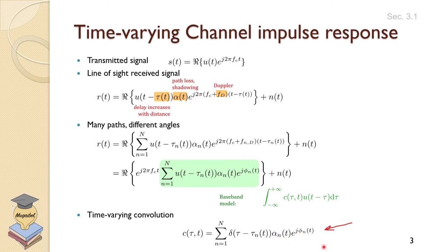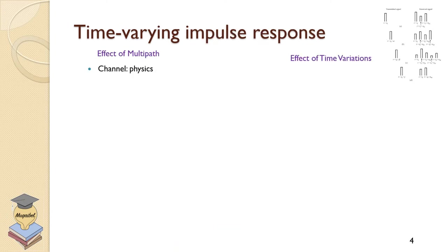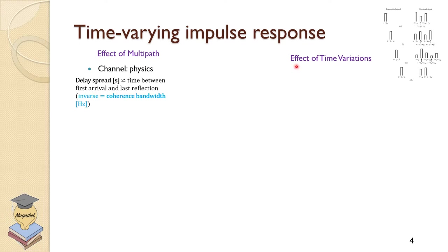I would suggest you remember this: the time varying impulse response captures both the effect of multi-path and the effect of time variations. On the left-hand side we focus on the effect of multi-path, and on the right-hand side we focus on the effect of time variation.